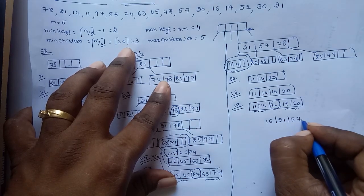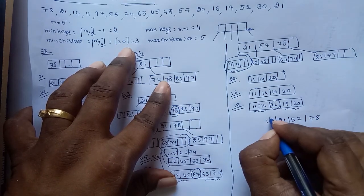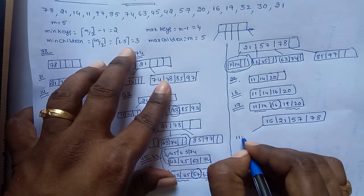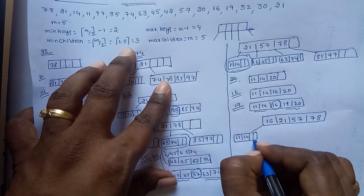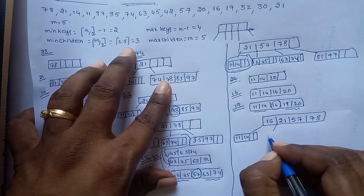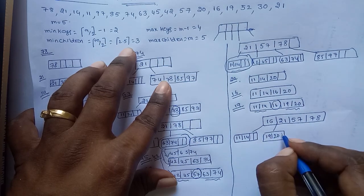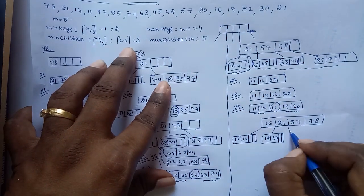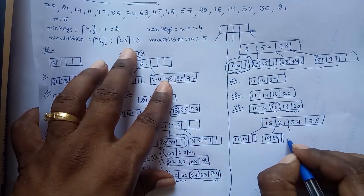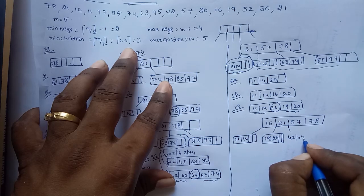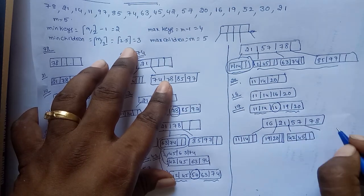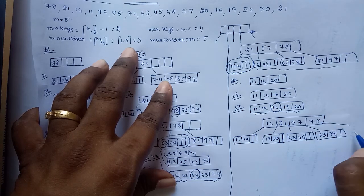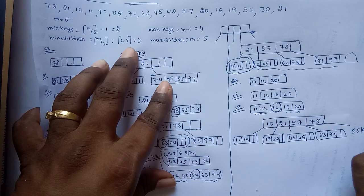By moving 16 to the root, the root becomes 16, 21, 57, 78. The children are: 11, 14 (left of 16); 19, 20 (right of 16 / left of 21); 42, 45 (right of 21); 63, 74 (right of 57); and 85, 97 (right of 78).